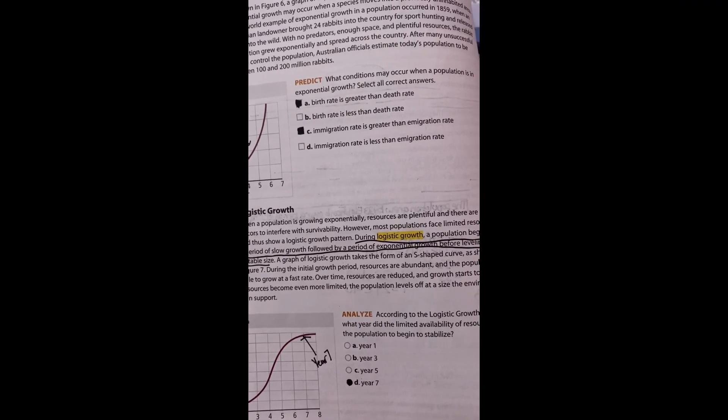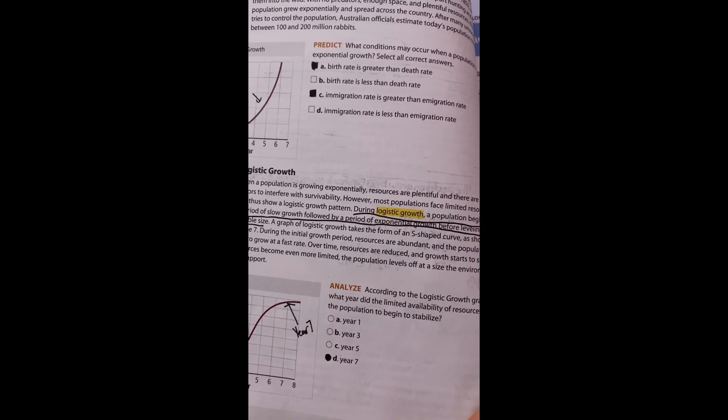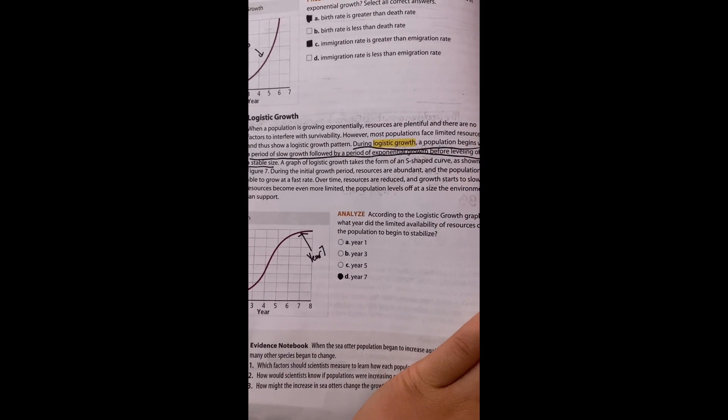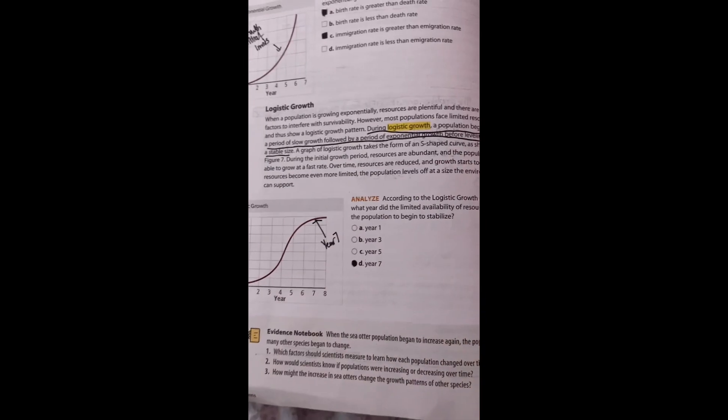Logistic growth. When a population is growing exponentially, resources are plentiful and there are no factors to interfere with survivability. However, most populations face limited resources and thus exhibit logistic growth pattern. A population begins with a period of slow growth, followed by a period of exponential growth, before leveling off to a stable size.